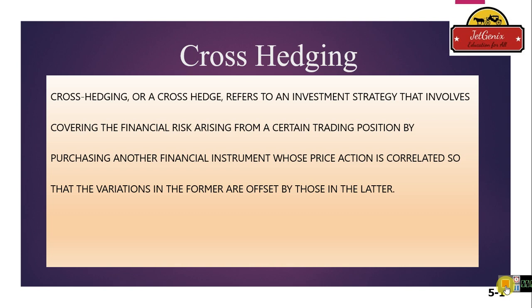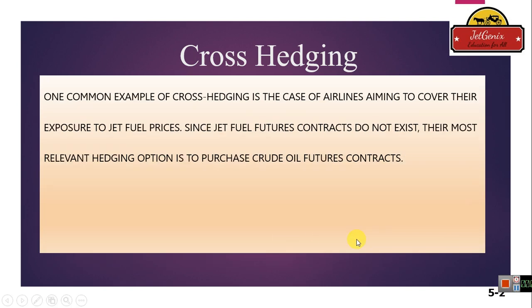In simple words, cross hedging is the strategy of hedging one asset against another asset. For example, let's assume you have shoes and there is a financial risk related to these shoes — you are going to hedge it with another product like a jacket. So if you are hedging the shoes with the jacket, it will be an example of cross hedging. I have quoted a clearer example that will make the concept crystal clear.